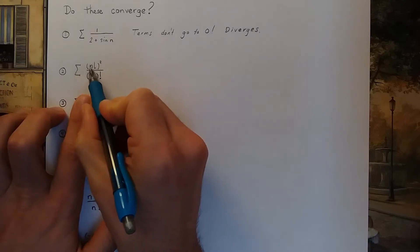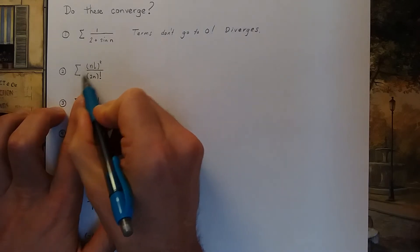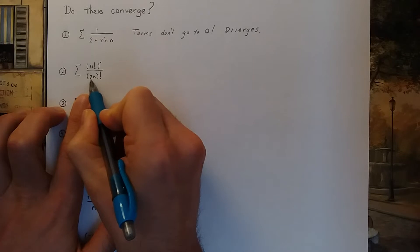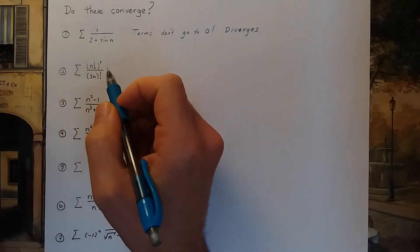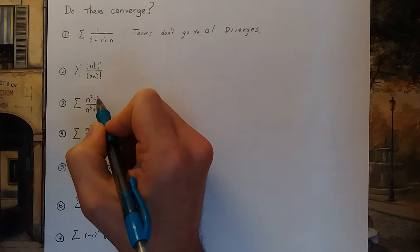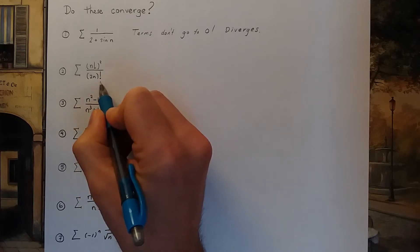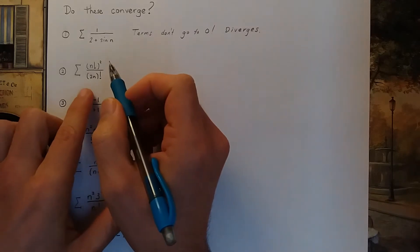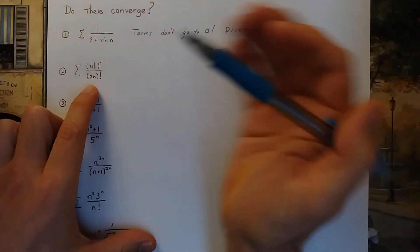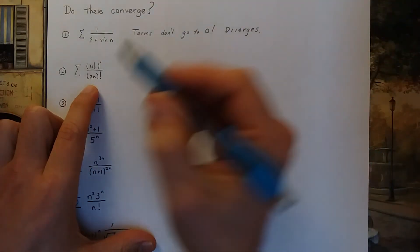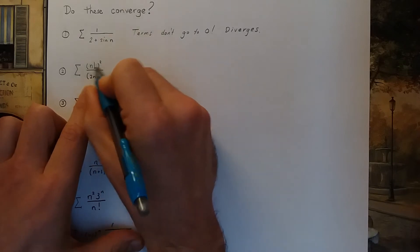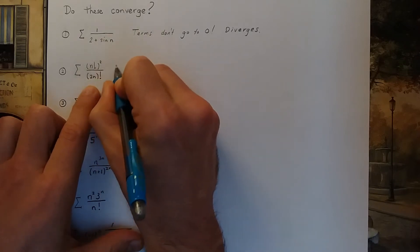Number two: the sum, n going from 0 to infinity, of n factorial squared over 2n factorial. When I see factorials in the problem, the first thing I think is ratio test, because when you do the ratio test, factorials simplify nicely. So let's try the ratio test.